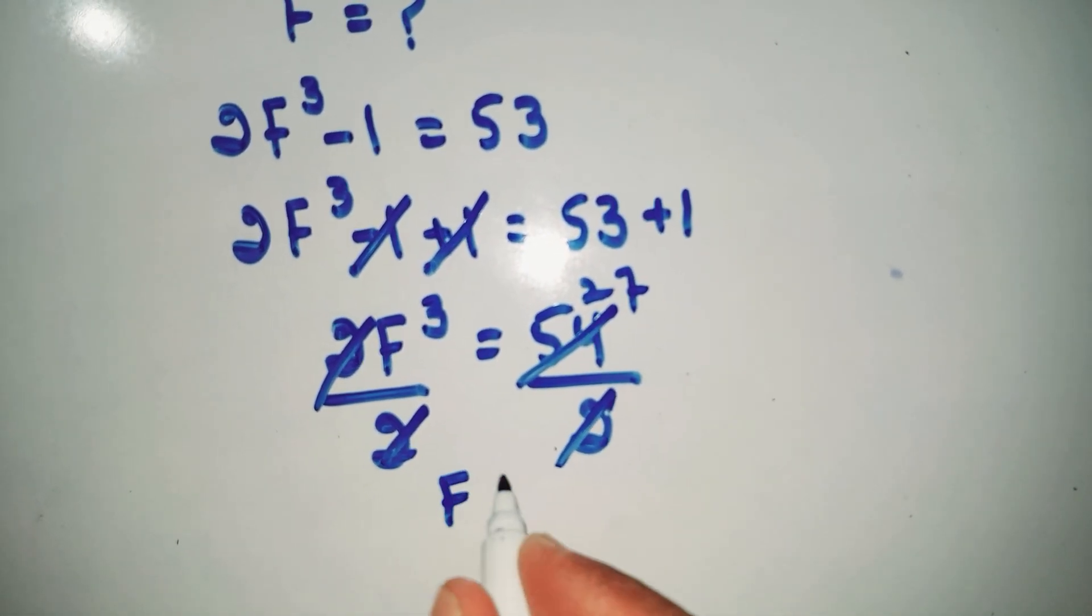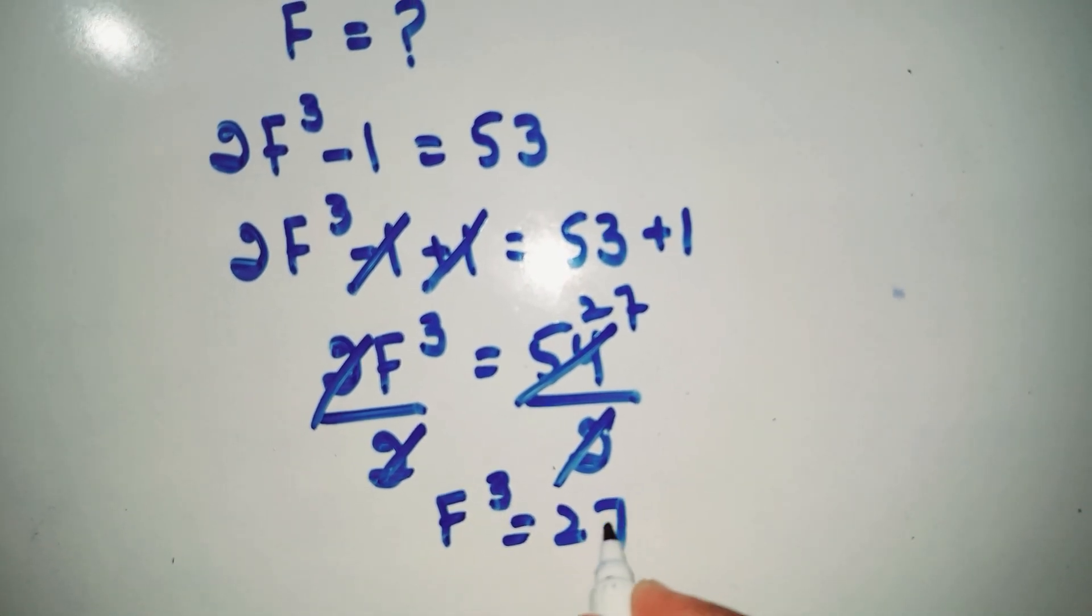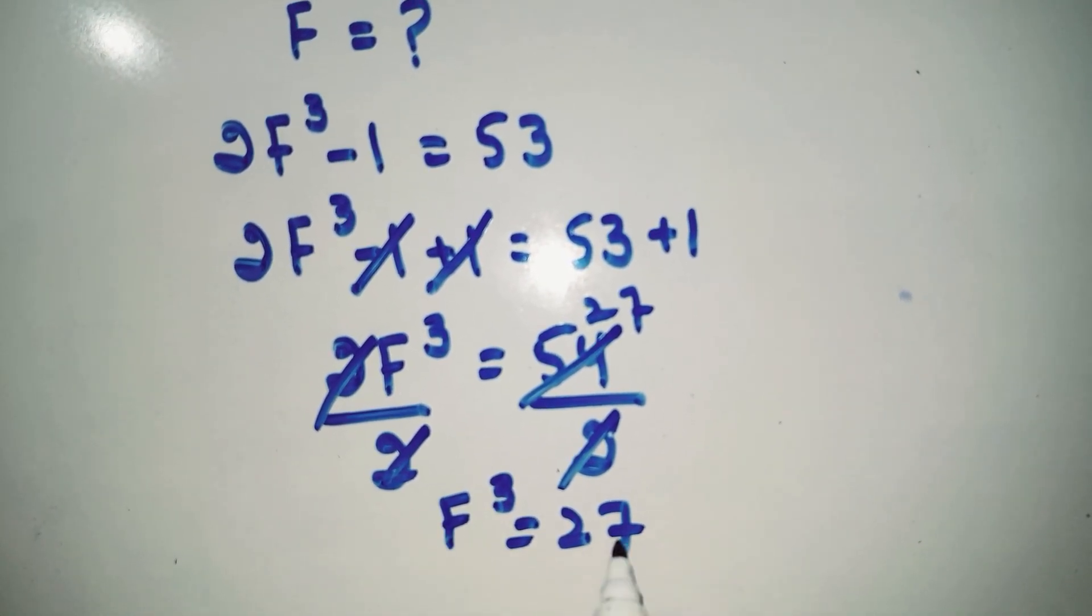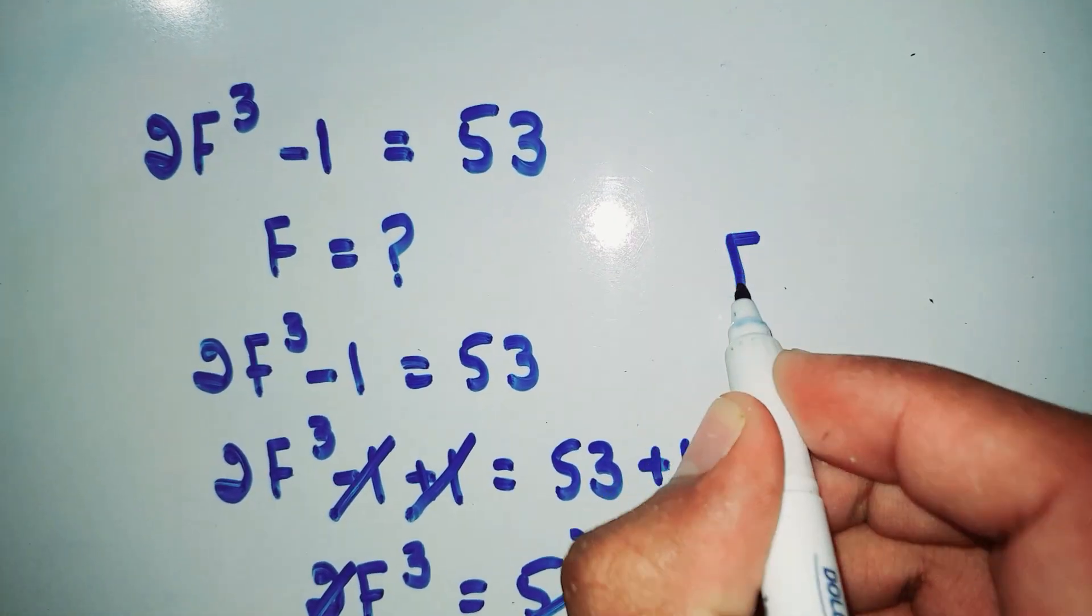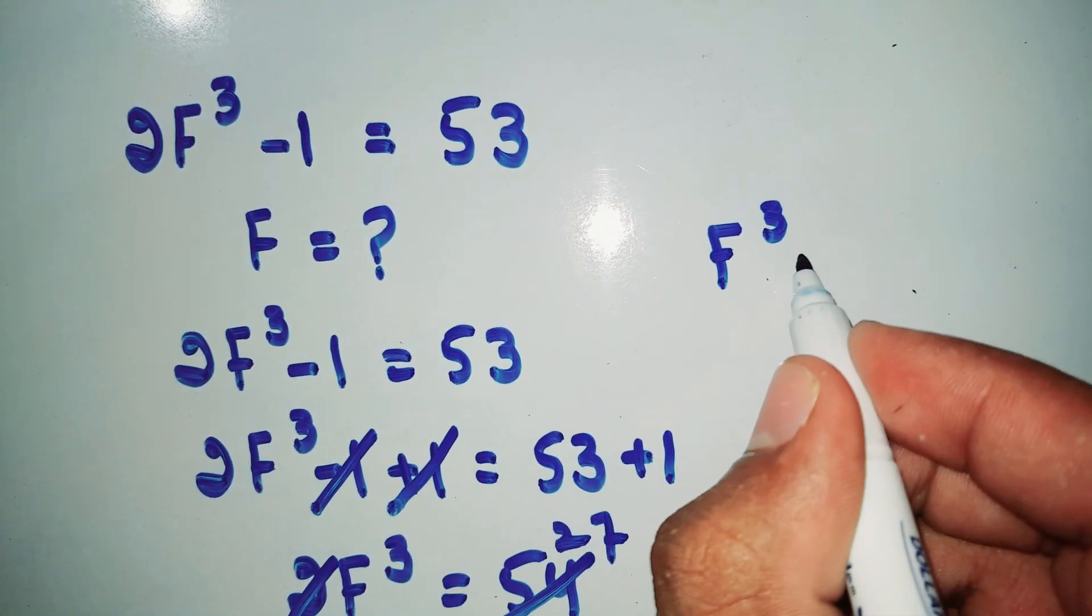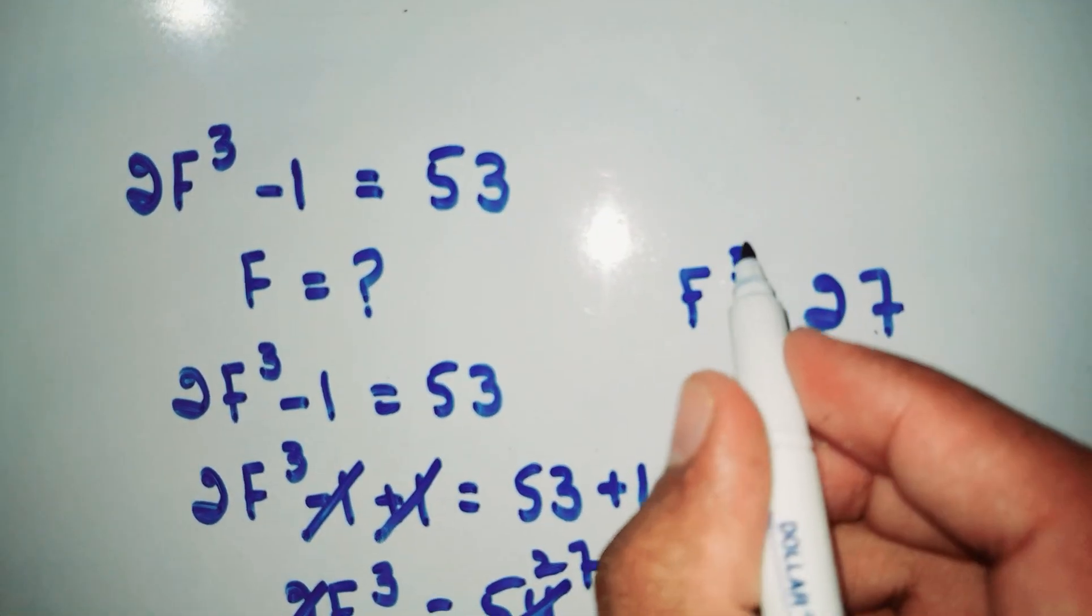So we write F³ = 27. We have to find the value of F, not F cube, so we further solve this. We write F³ = 27. Now we take cube root both sides.